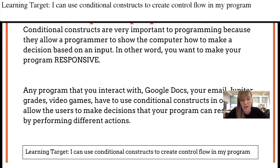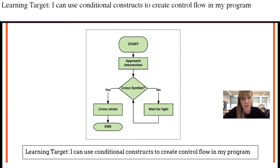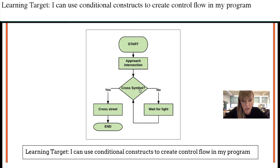We saw this in the flowchart for video game design — was the G key pressed? Yes. Change the weapons. In real life, a conditional construct would look like the intersection problem: we approach the intersection, we ask ourselves, is there a cross symbol? If yes, go ahead and cross the street. If no, keep waiting for the light. And then we end. This right here is actually a loop, which we'll see a bit later. But the conditional construct is the diamond shape with the two actions based on the yes or no branches of the flowchart.